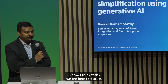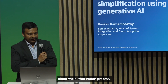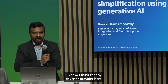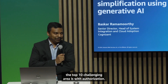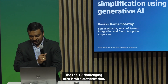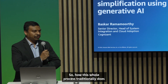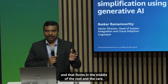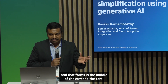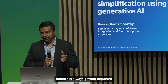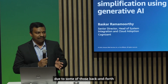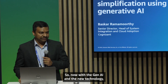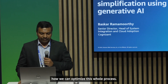Today we are here to discuss about the authorization process — the top 10 challenging areas with authorization. How this whole process traditionally involves various manual interventions, and that forms a cost and care balance issue, always getting impacted due to back-and-forth manual processes within authorization. Now, with Gen AI and new technology, how we can optimize this whole process.